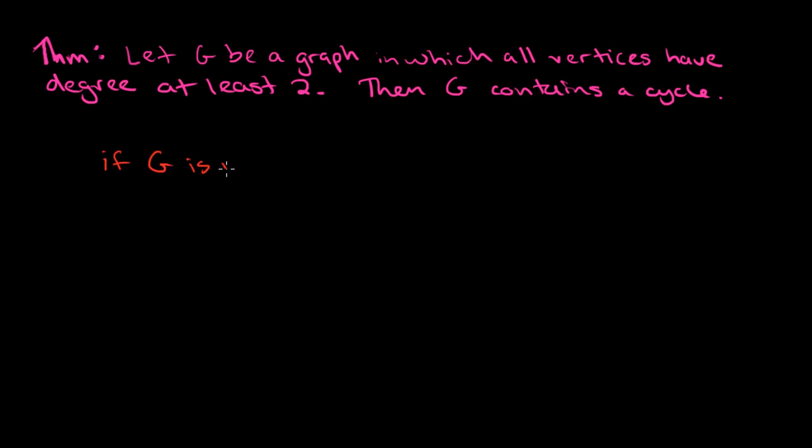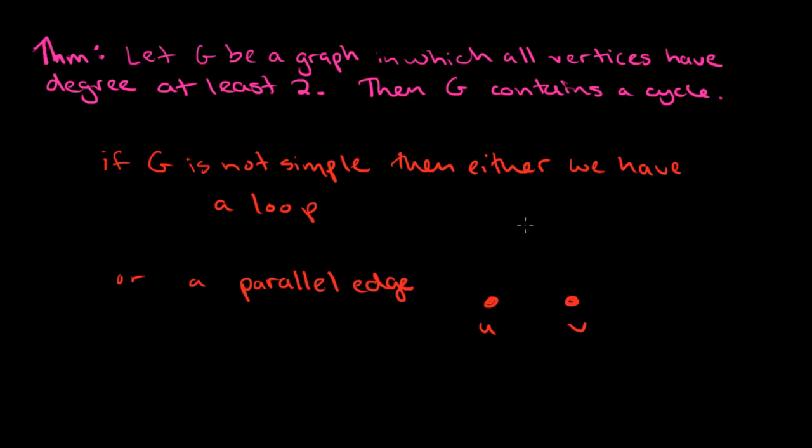Well, then either we have a loop or a parallel edge. And a parallel edge is like a multiple edge that happened between the same pair of vertices. And a loop is an edge that goes between a vertex and itself. So these are the two examples.